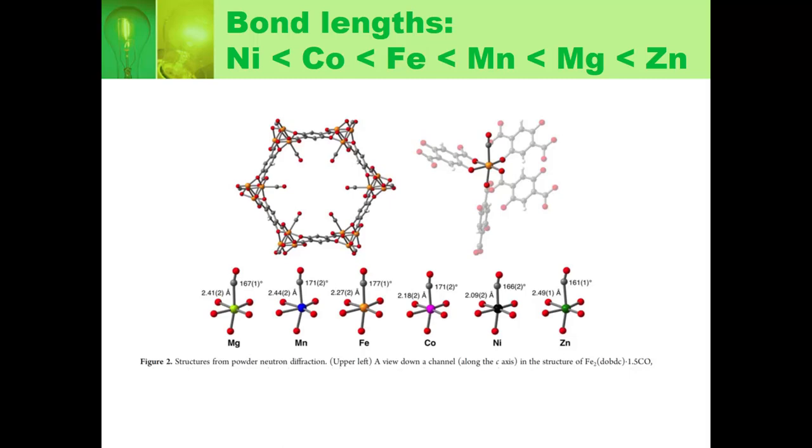They have the different colors for the different metals. Then they see how CO binds. It comes in and it binds, and you can see that they have a bond angle, like 167 for the yellow magnesium, and they have a bond length, 2.41 angstroms for the magnesium as well. Again, you see that they have a bond angle and length for CO binding the metal, like this, for each of these, how many is it, six.